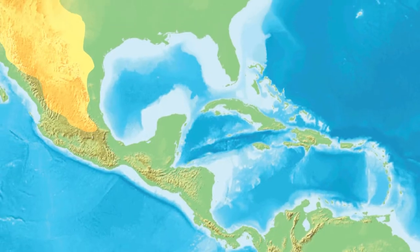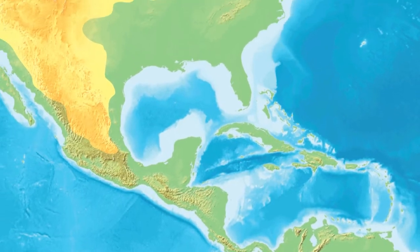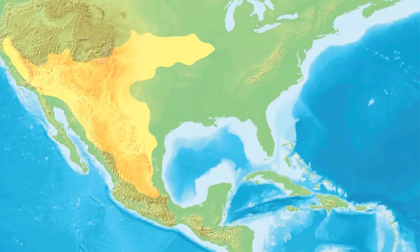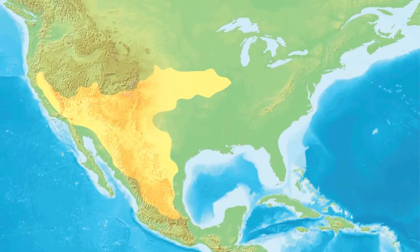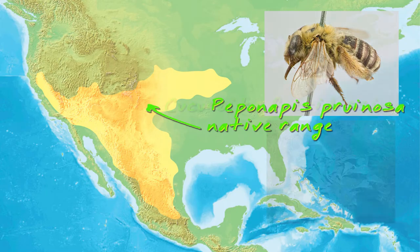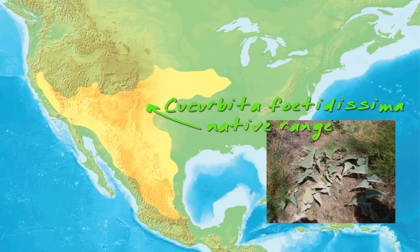Most squash bees are native to Central and South America, and only one, Peponapis pruinosa, naturally ranges into parts of North America, where it has historically relied on a wild uncultivated squash plant called cucurbita foetidissima.